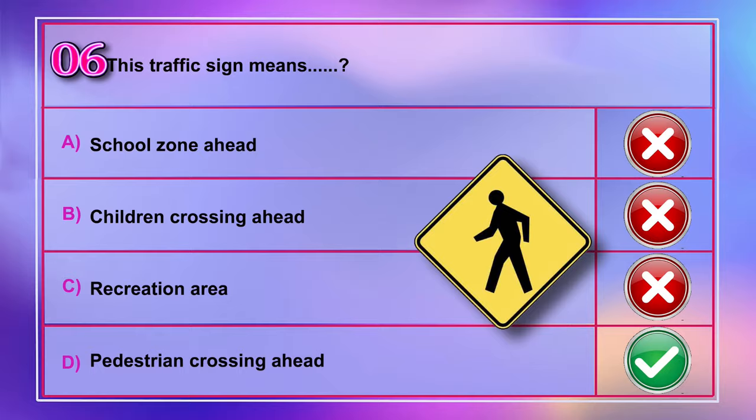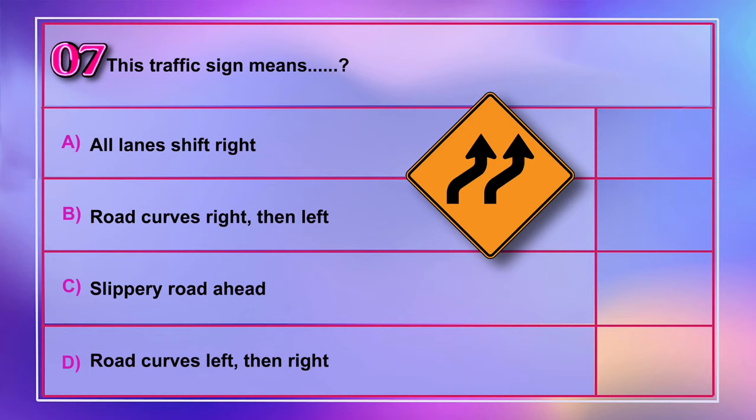Question number 7: This traffic sign means A) all lanes shift right, B) road curves right then left, C) slippery road ahead, D) road curves left then right. Correct answer is A: all lanes shift right.